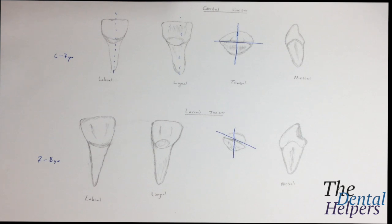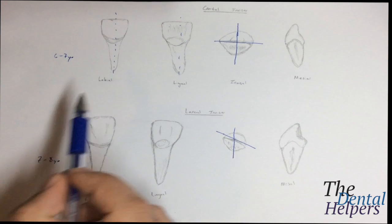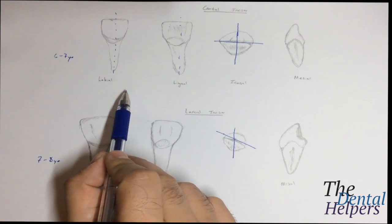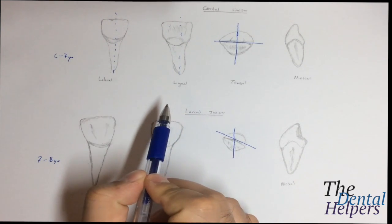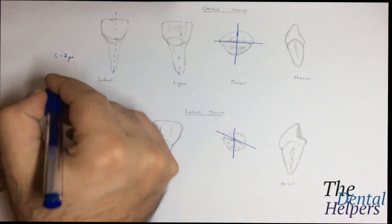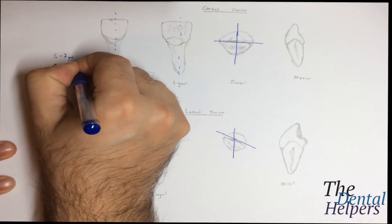So the mandibular central, as I said, they're bilateral. These are going to be the smallest teeth with respect to any other tooth in your mouth. So that's the big thing, it's the smallest tooth.